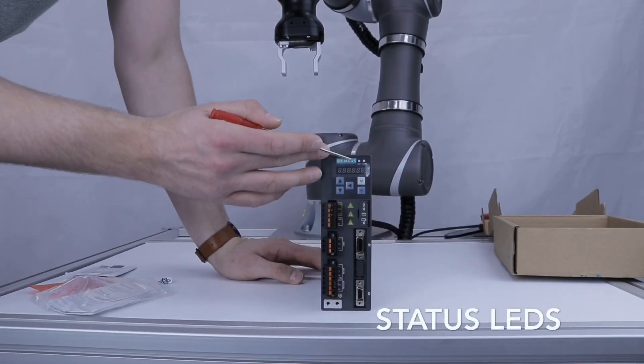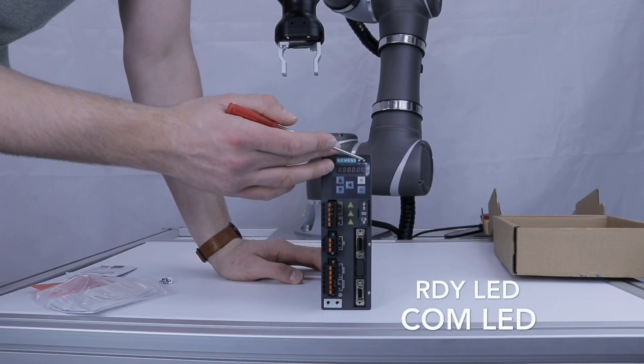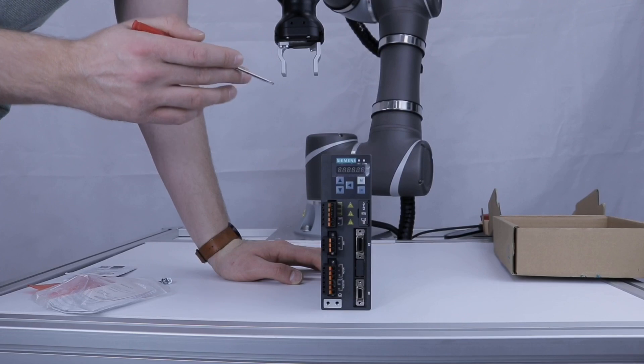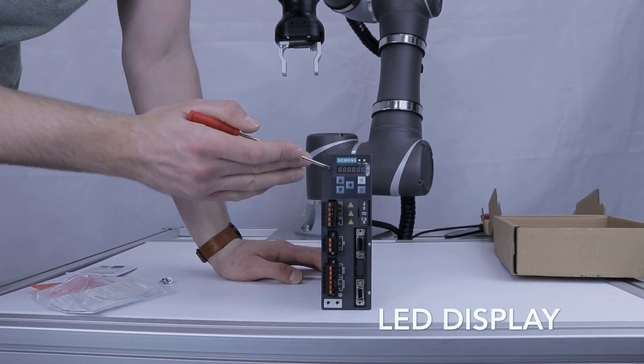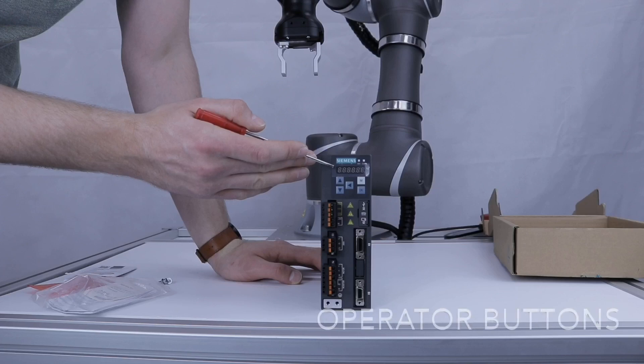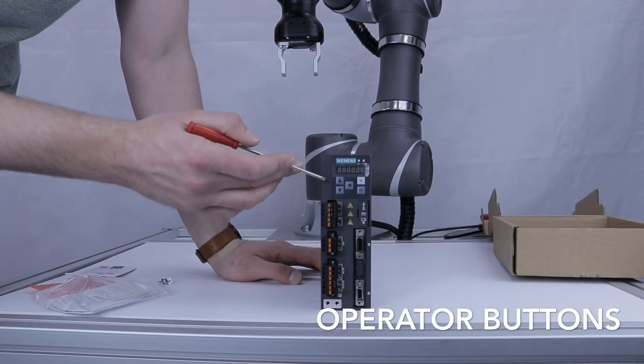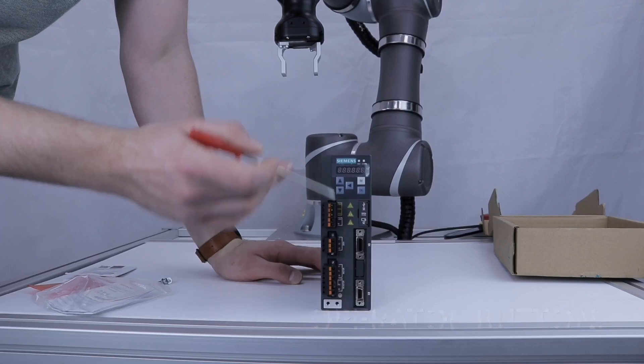There are two status LEDs on front of the unit. The RDY or Ready LED indicates that the motor is enabled. The COM LED indicates the status of the PROFINET communications. The LED displays the drive status information and fault codes. The operator buttons in combination with the LED display can be used to commission the drive, set parameters and clear faults.